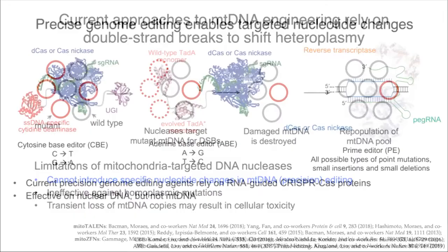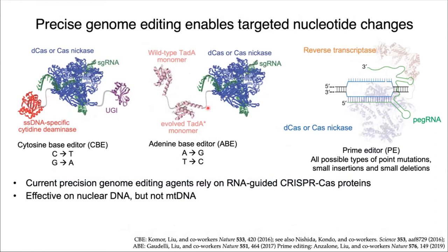Our lab has developed a variety of CRISPR-based tools that enable targeted nucleotide changes to be made in the nuclear DNA. Shown here are some examples. The cytosine base editor, or CBE, is able to make CG to TA edits, and the adenine base editor can make AT to GC edits. The prime editor can introduce all possible types of DNA point mutations, small insertions, as well as small deletions.